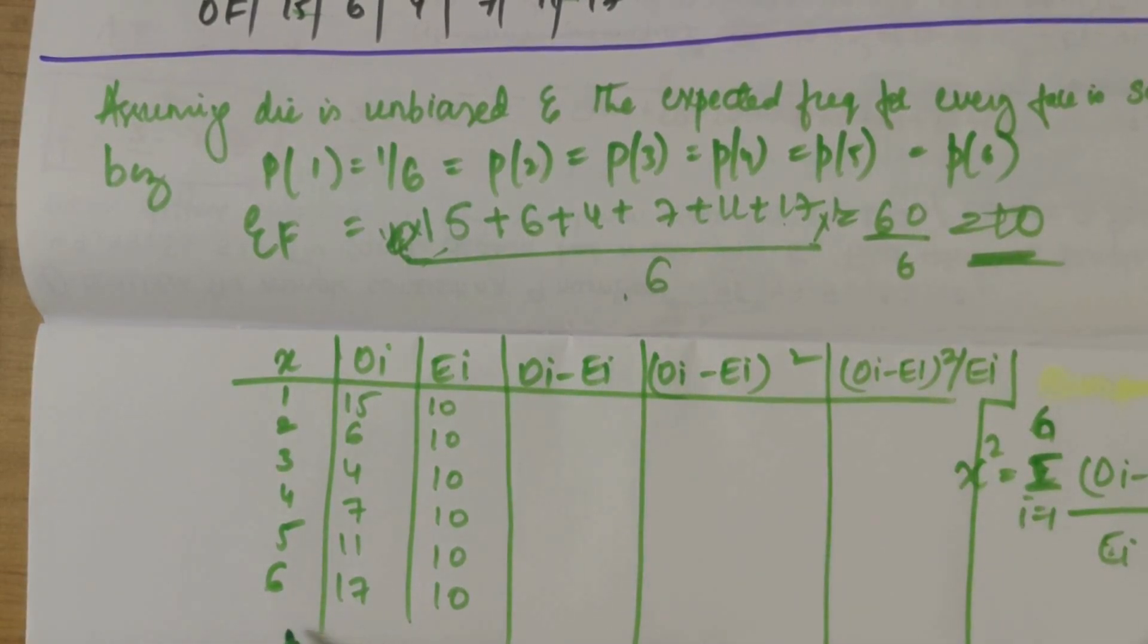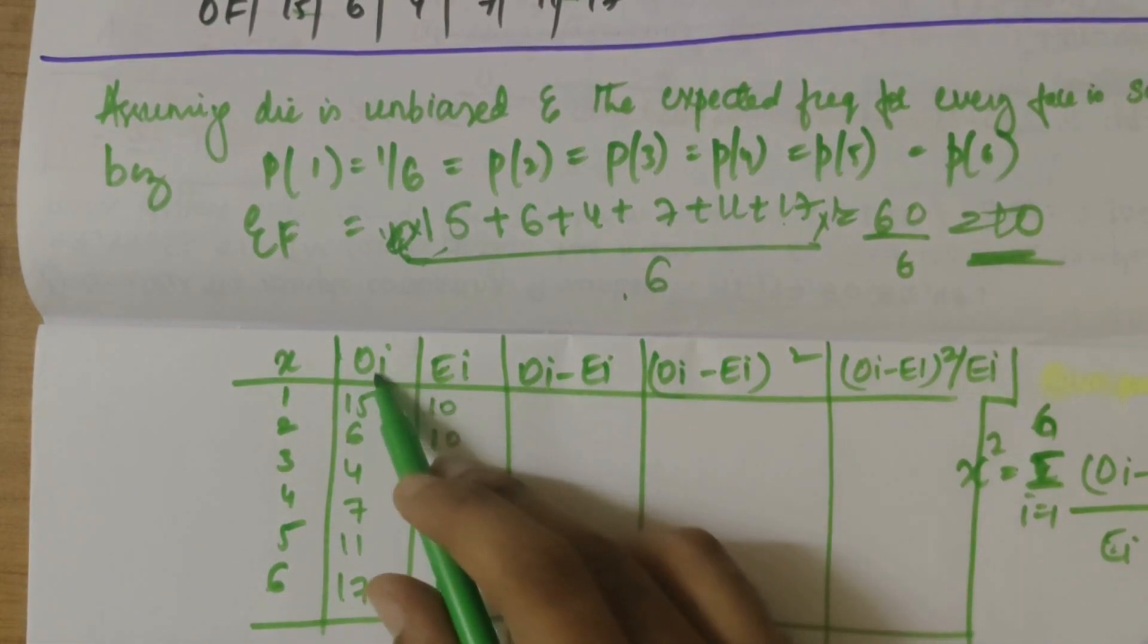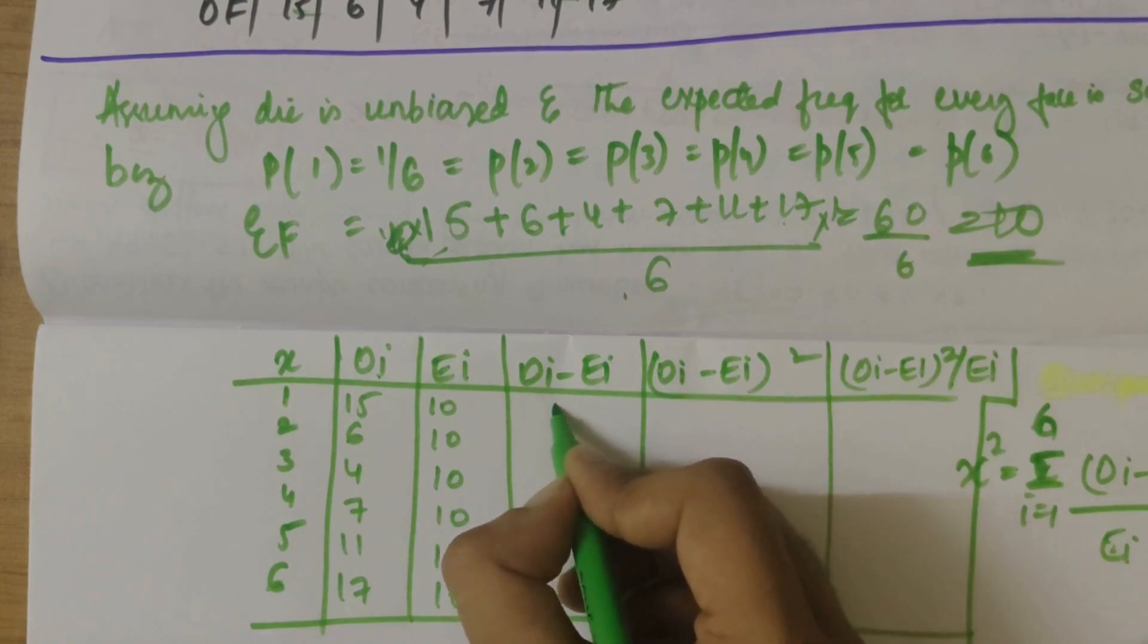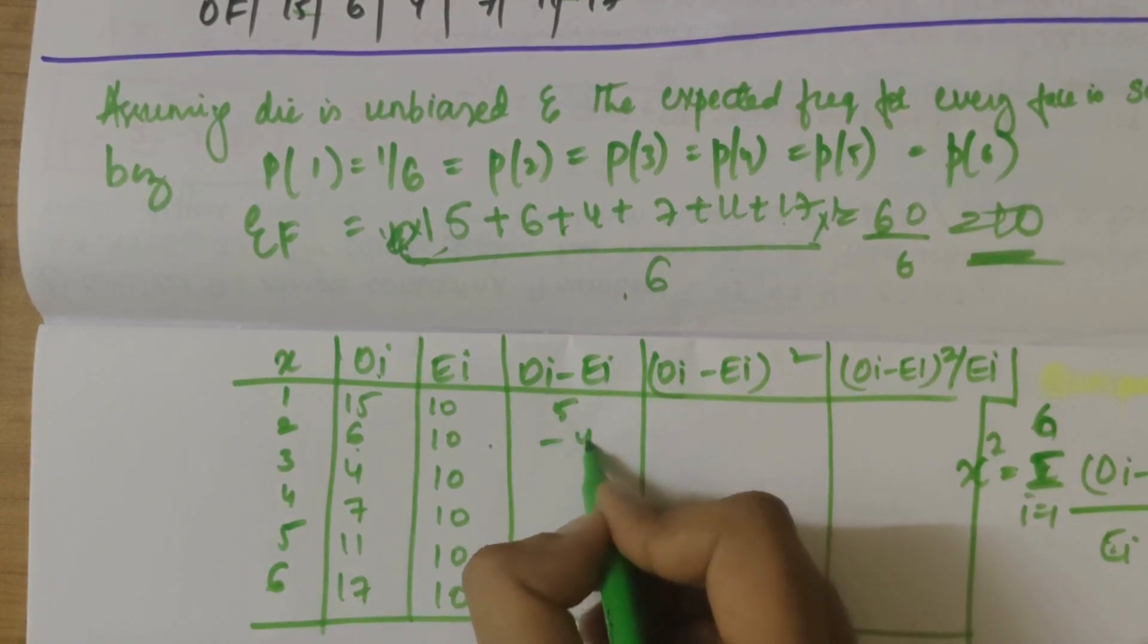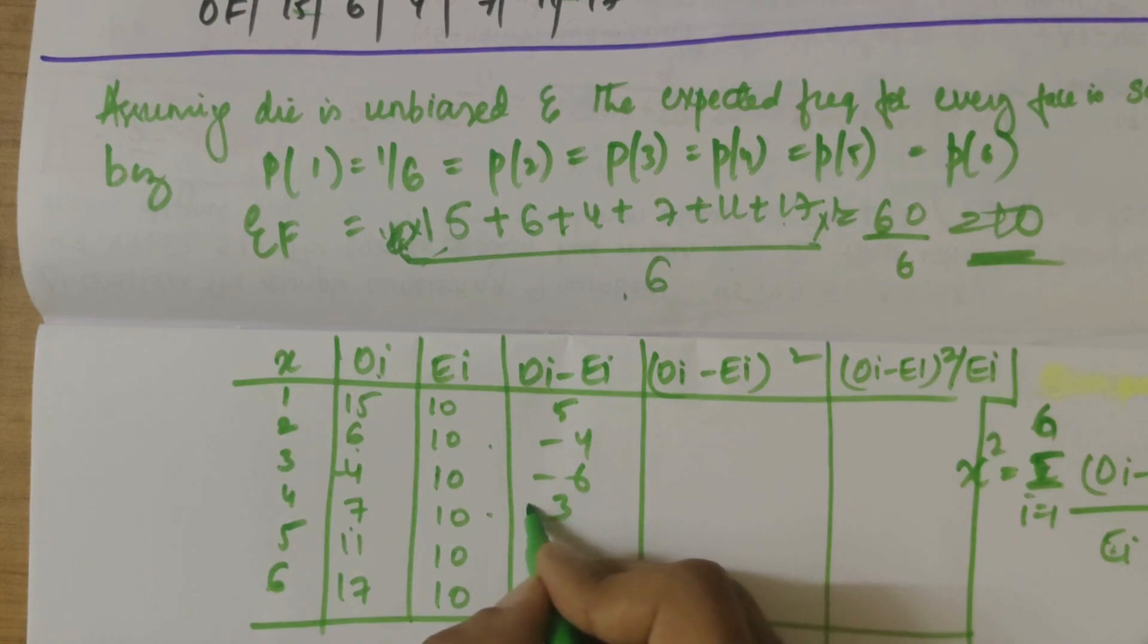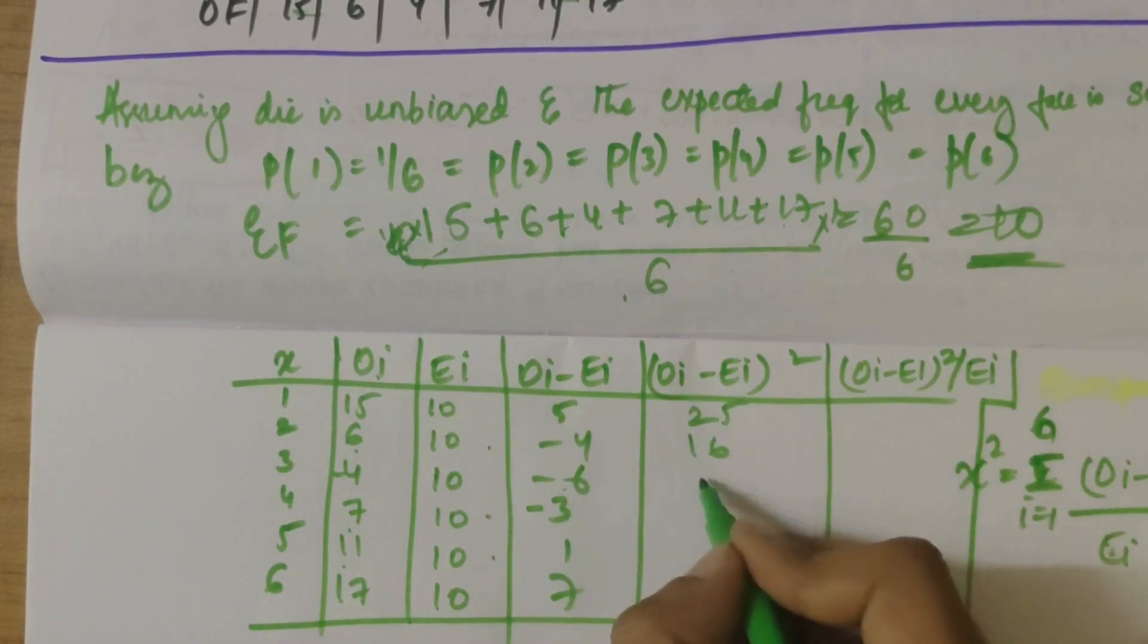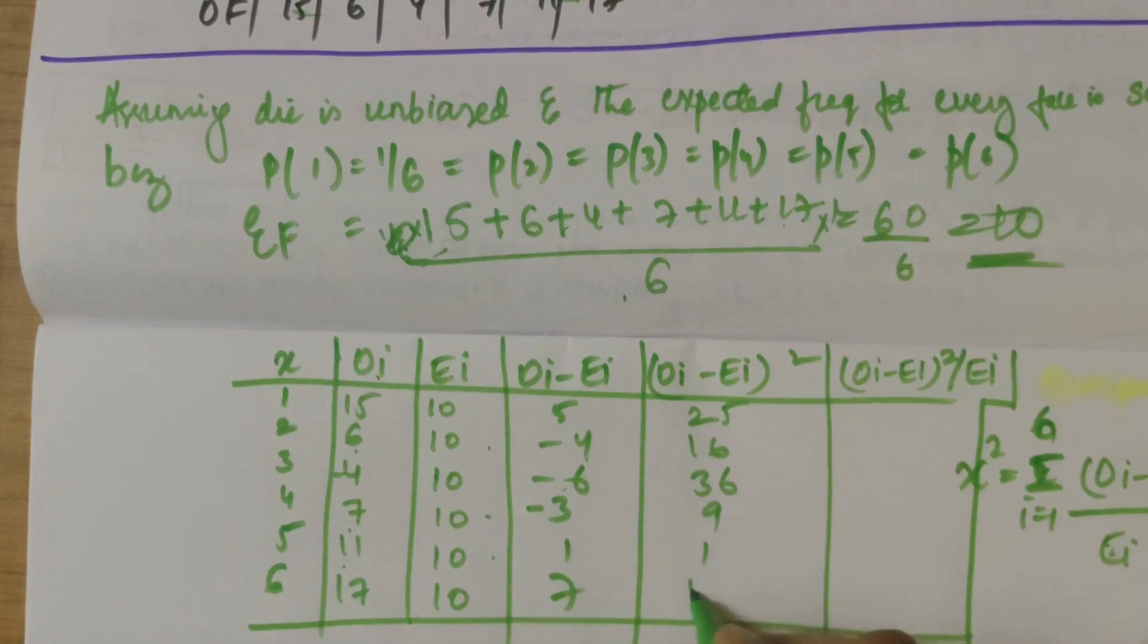You can solve these things directly in the calculator which is very simple. So let's subtract OI minus EI. Here we'll get 5, 6 minus 10 is minus 4, minus 6, minus 3, 11 minus 10 is 1, 17 minus 10 is 7. OI minus EI whole square: 5 square is 25, 16, 36, 3 square is 9, 1 square is 1, and 7 square is 49.